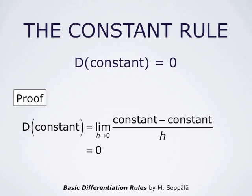The constant rule follows from the definition of the derivative. A constant minus the same constant is 0, so the difference quotient is 0 divided by h, which is always 0, and its limit as h approaches 0 is also 0. Therefore, we conclude that the derivative of a constant function is 0.